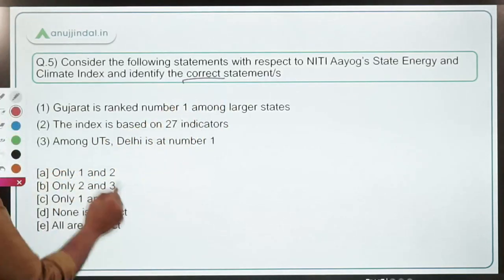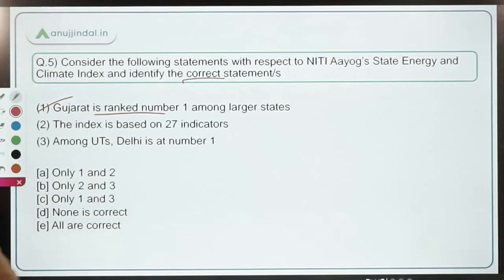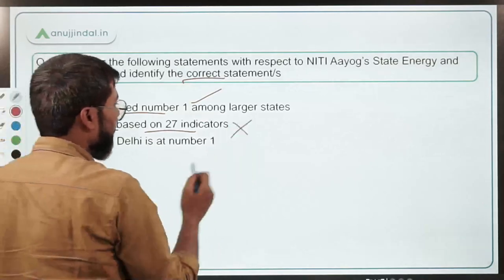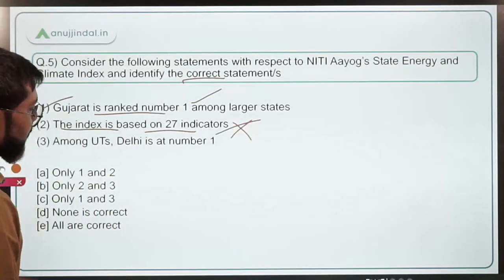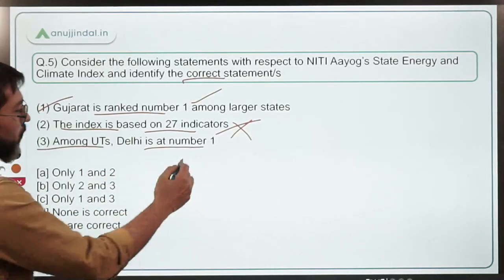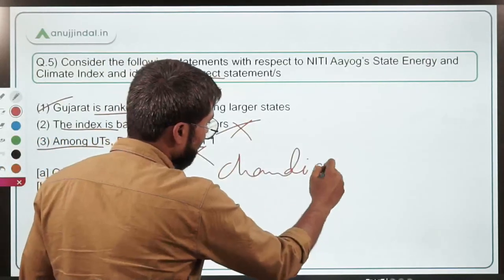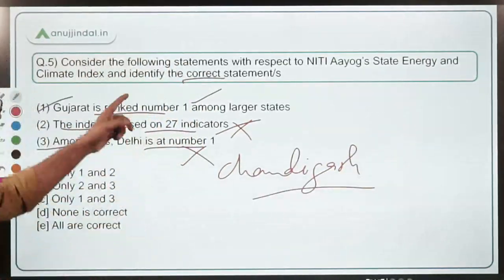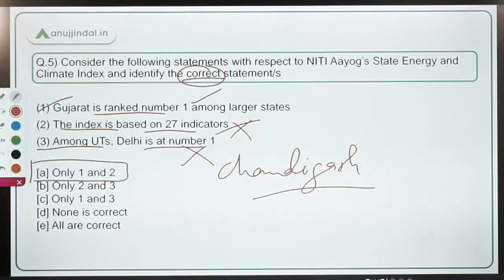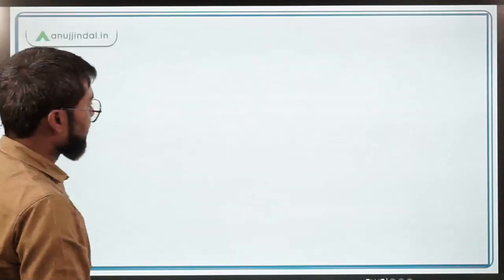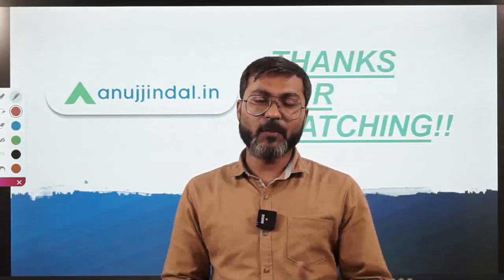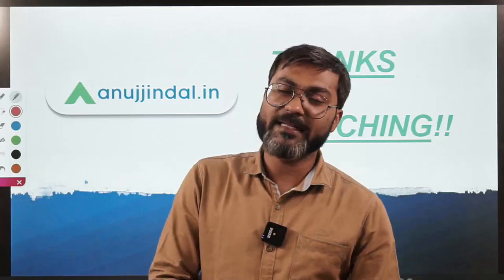Coming back to the question: Gujarat ranked number one among larger states — correct. The index is based on 27 indicators and six parameters — correct. Among UTs, Delhi is at number one — incorrect, as Chandigarh is number one and Delhi is number two. So statements one and two are correct, making option A the answer. That's it for today's session — if you have any doubts, ask in the comment section. Thank you for watching and God bless!